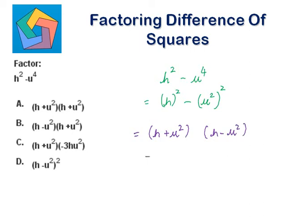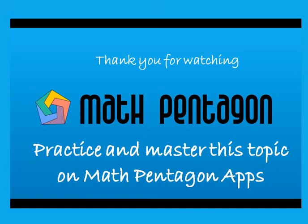We can also write this as h minus u squared times h plus u squared, so b is the answer. I hope you can practice more problems on factoring difference of squares now. Thank you for watching. Have a great day. Bye-bye.